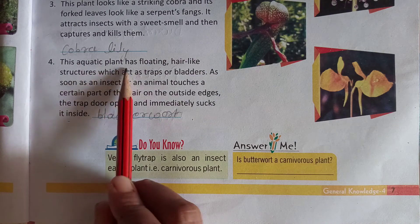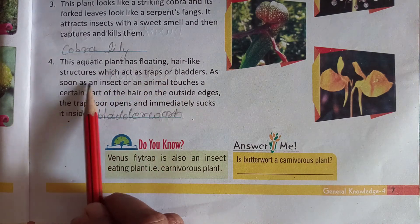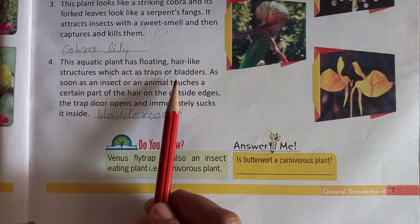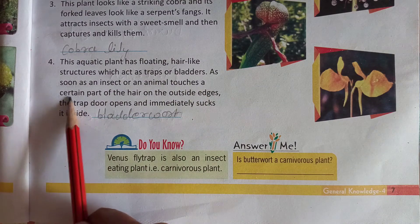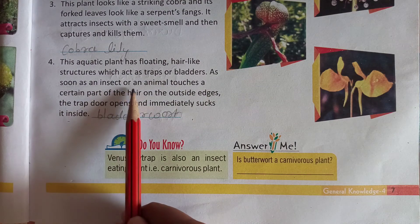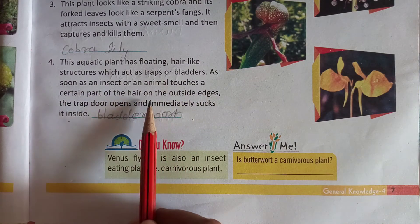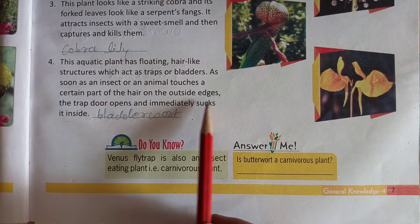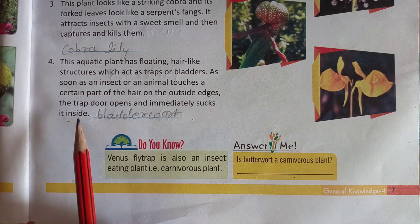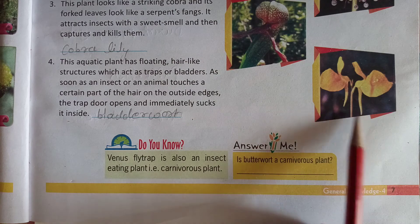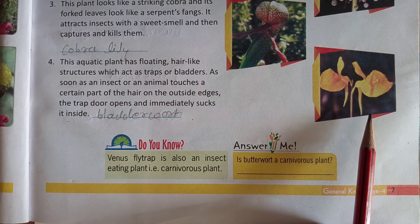This aquatic plant has floating hair-like structures which act as traps or bladders. As soon as an insect or an animal touches a certain part of the hair on the outside, the trap door opens and immediately sucks it inside. This plant is called bladderwort.